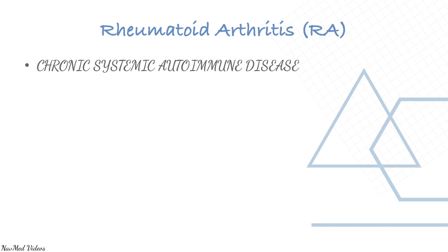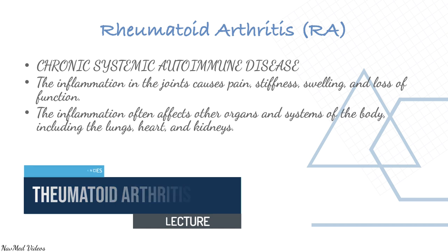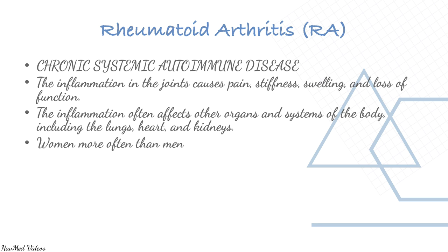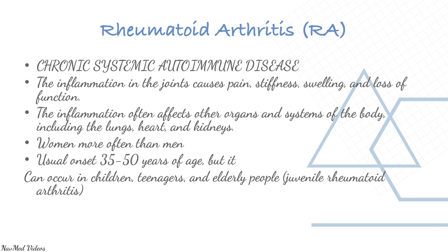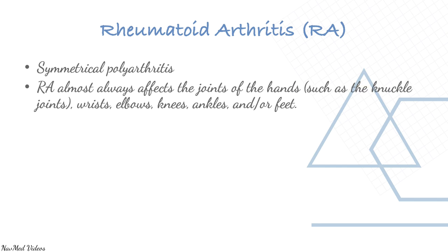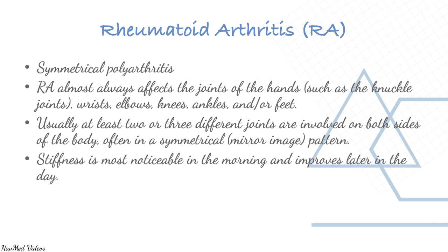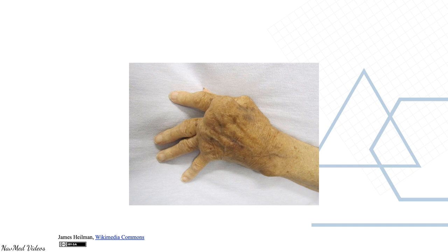Rheumatoid arthritis is a chronic systemic autoimmune disease where inflammation in joints causes pain, stiffness, swelling, and loss of function. It often affects other organs and systems; it occurs more in women than men, usually with onset between 35 and 50 but can occur in children, teenagers, and the elderly. It is characterized by symmetrical polyarthritis, most commonly affecting joints of the hand, wrist, elbows, knees, ankles, or feet — usually at least two or three joints on both sides of the body in a symmetrical pattern. Stiffness is most noticeable in the morning and improves later in the day.